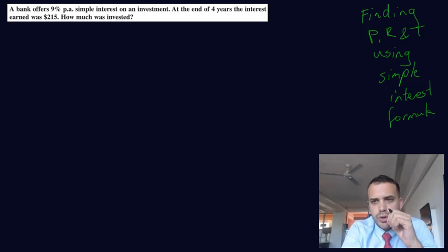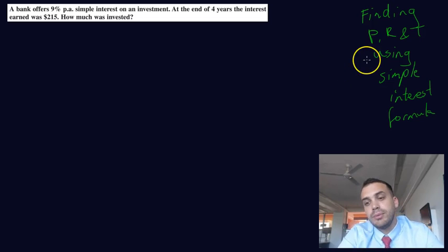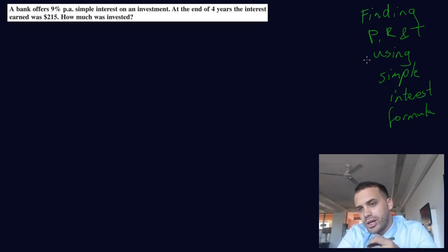So we're continuing our work with the simple interest formula. This time, or in previous videos, you found I and you found A. In this video, however, you're going to find P, R, and T, the other parts of the formula.